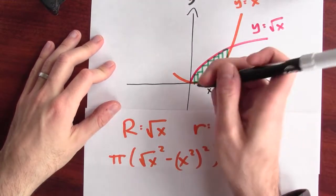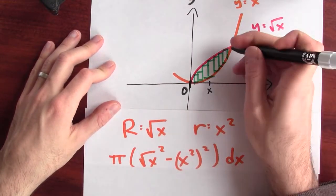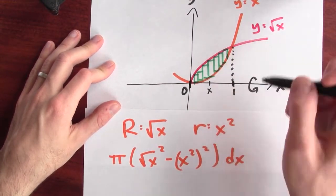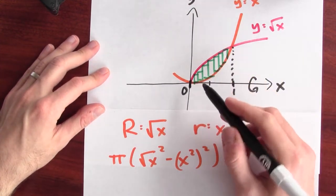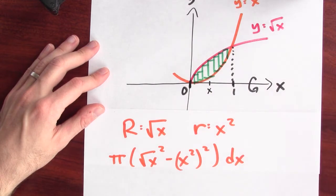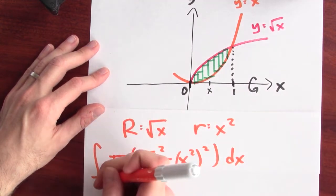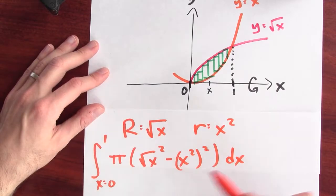What about the endpoints of integration? Well, in my picture, x could be as small as 0 or as big as 1. I want to add up the volumes of washers for x between 0 and 1. So my integral is going to go from x equals 0 to 1.